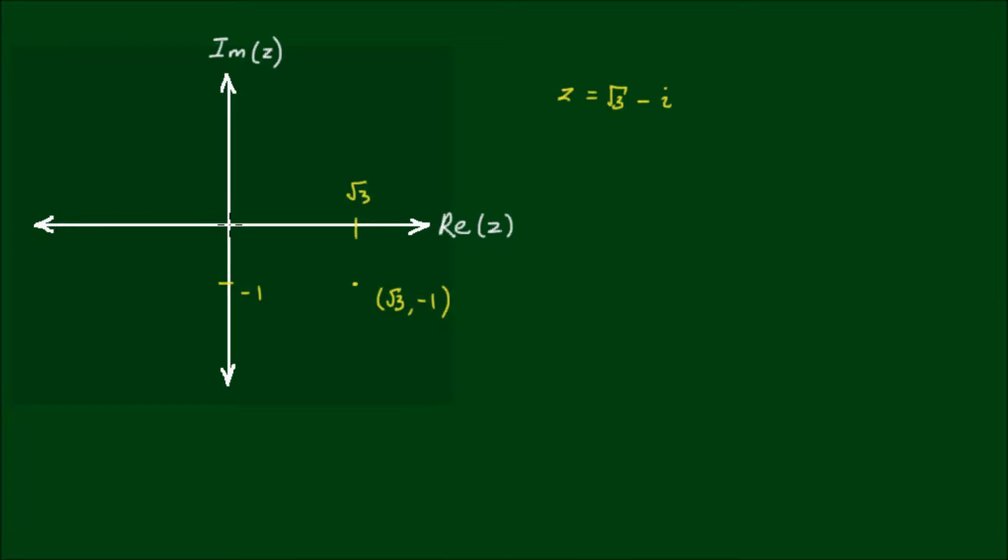Then if I complete the picture by drawing a vector from the origin to the point, this is my vector representation of z. So the modulus of z, or the magnitude of z,